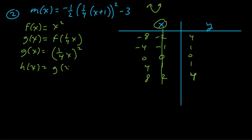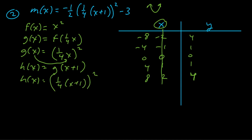Next, h(x) = g(x + 1). We replace x with x + 1, so h(x) = (¼x + 1)². The x + 1 is grouped with x, so this is a shift — a translation left one. It has the opposite effect, so we subtract one from all x coordinates, giving -9, -5, -1, 3, and 7.